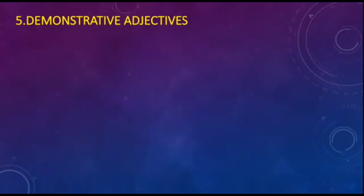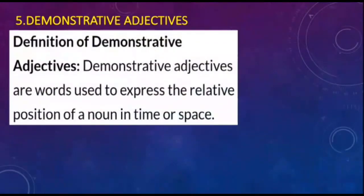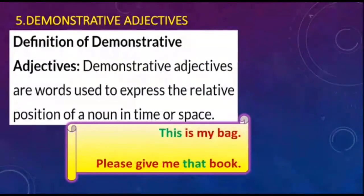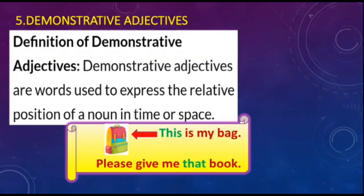Demonstrative adjectives are words used to express the relative position of a noun in time or space — whether it is closer or farther from you, and whether it is singular or plural. For example, 'This bag is mine' — 'this' is a demonstrative adjective that describes the position of the bag as closer and singular.